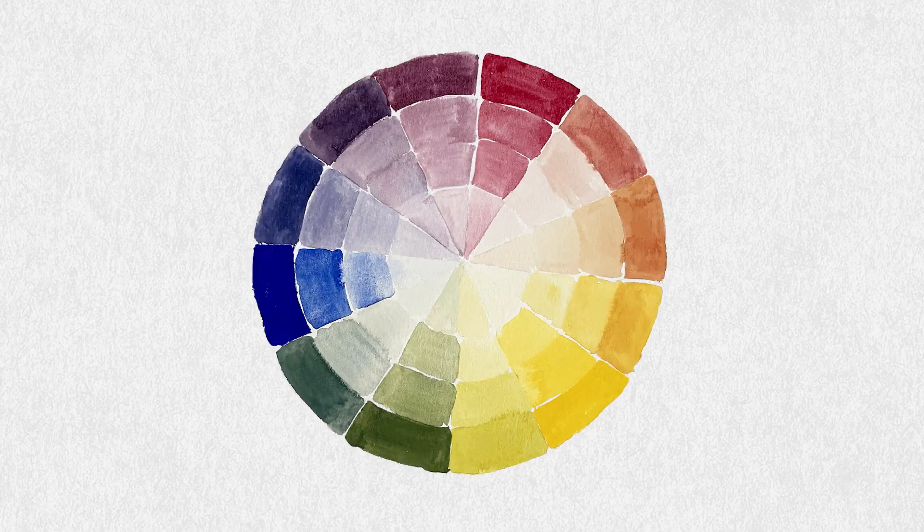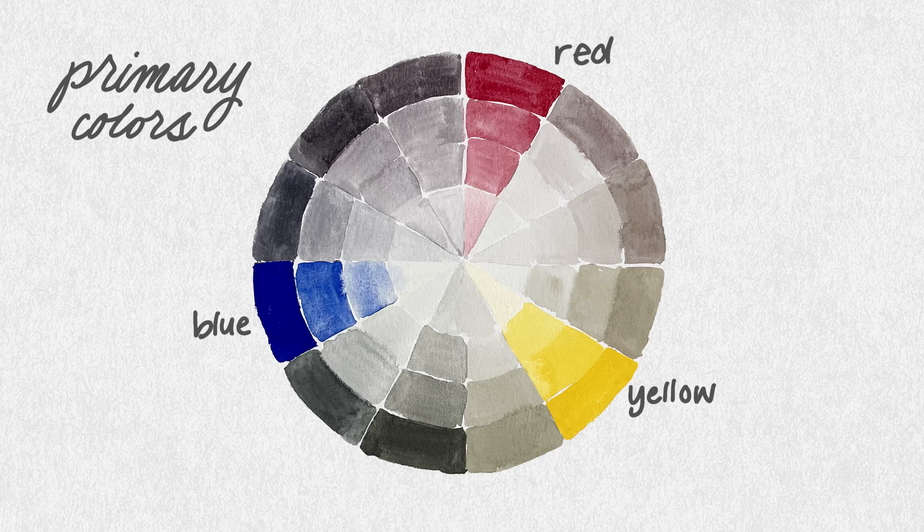So what is color theory? Color theory is a set of rules that explains what happens when you mix colors. These rules apply to every art form, including watercolors. And color theory was originally formed by the three primary colors: red, yellow, and blue.